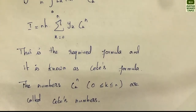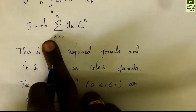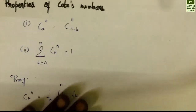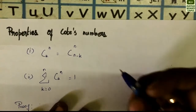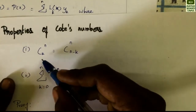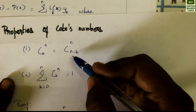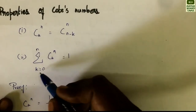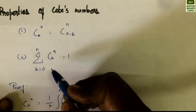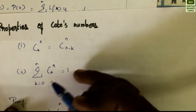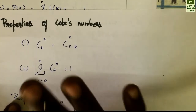This is the Cotes formula, and Ckn are the Cotes numbers. The Cotes numbers have two important properties. The first property is Ckn = C(n−k)n, meaning the Cotes numbers are symmetric. The second property is that summation k = 0 to n of Ckn = 1.